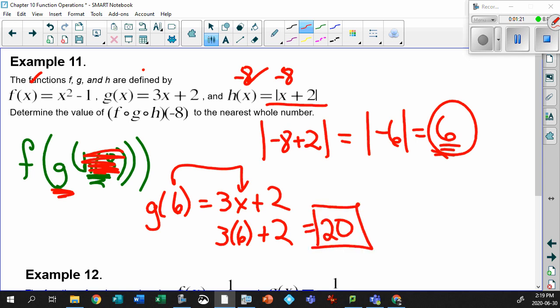Woo-hoo! Now we take that. Now that we know this, we're finding f at 20. Woo-hoo! Okay, so f at 20—f of x is x squared minus 1.